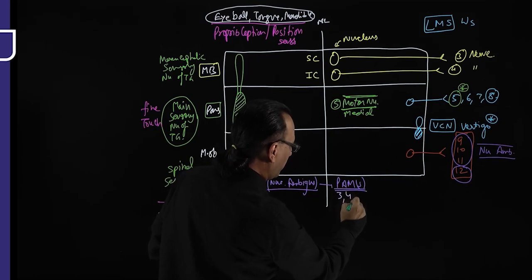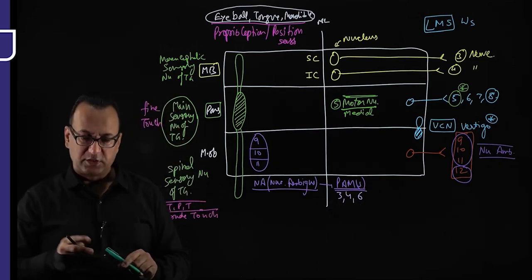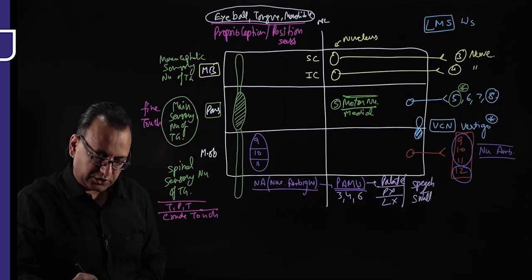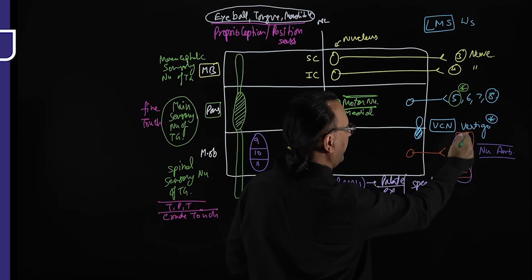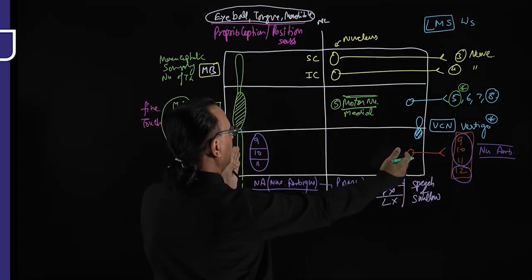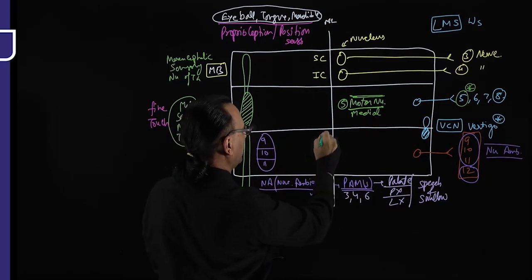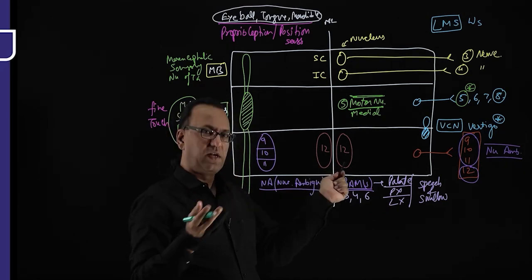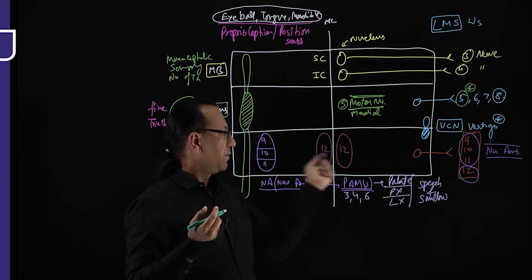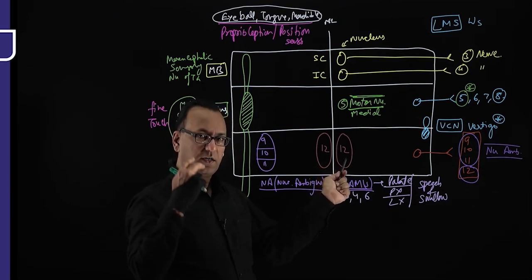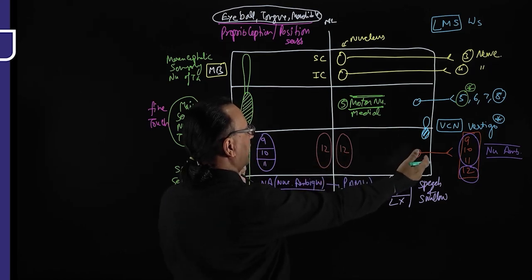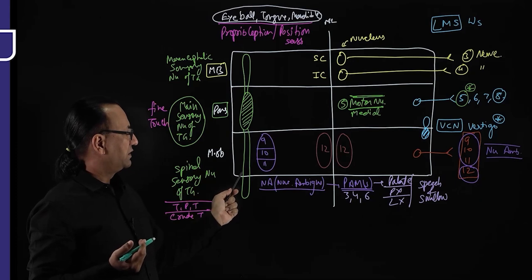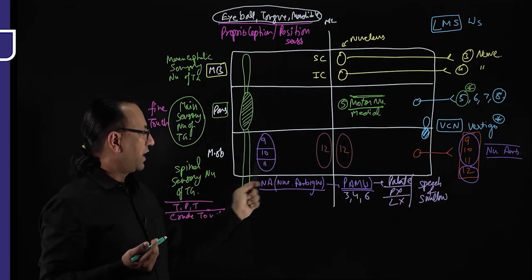The nucleus ambiguous controls pharyngeal arch muscles — muscles of the palate, pharynx, and larynx for speech and swallowing. The 12th nerve nucleus is near the midline. In medial medullary syndrome, ischemia compromises the 12th nucleus causing tongue muscle palsy. In lateral medullary ischemia, several nuclei are involved including the spinal sensory nucleus of trigeminal and nucleus ambiguous.